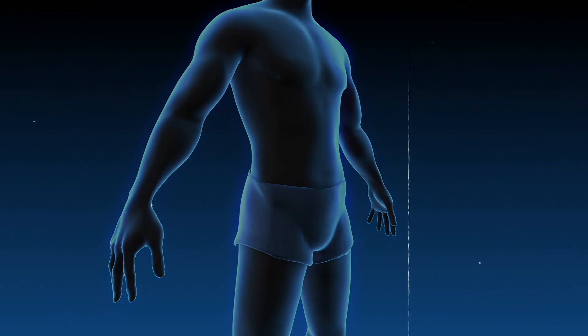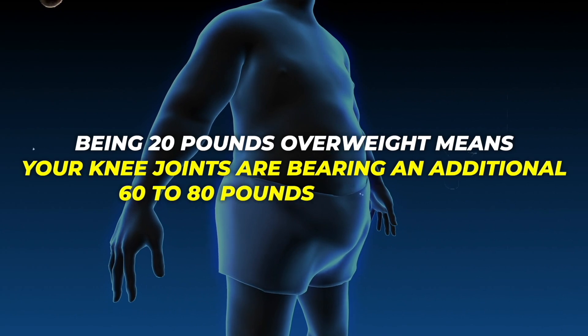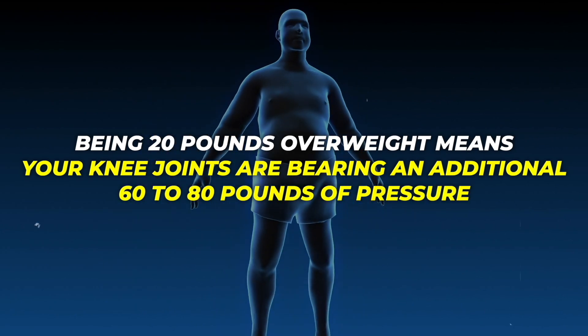So why does metabolic health impact arthritis so profoundly? Let's take body weight as an example. Consider the direct impact of carrying extra weight and the mechanical stress it imposes on the knees. For individuals who are obese, every additional pound translates into three to four times that pressure on weight-bearing joints such as the knees and hips. Being 20 pounds overweight means your knee joints are bearing an additional 60 to 80 pounds of pressure, significantly accelerating wear and tear.